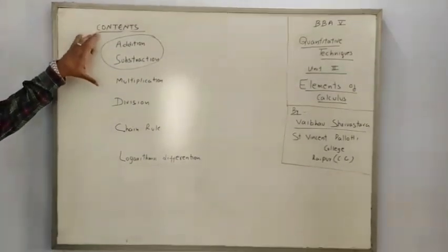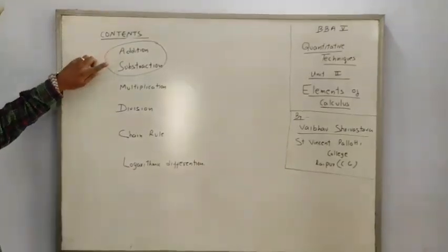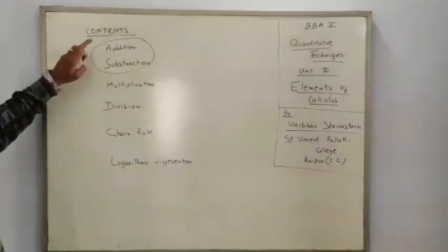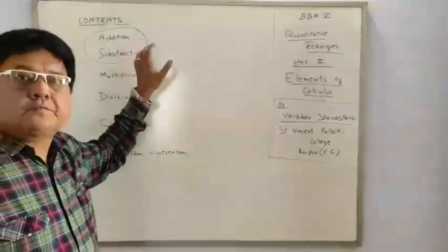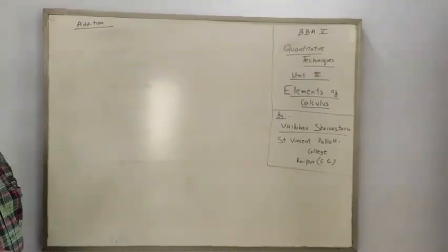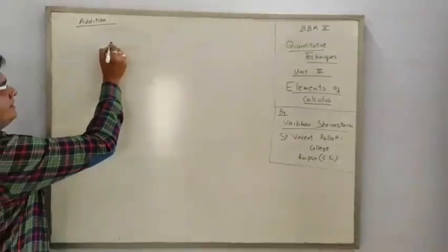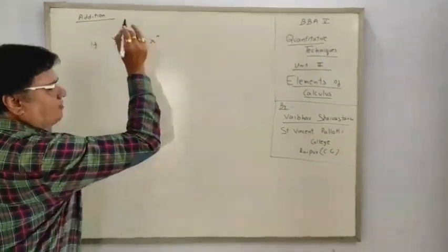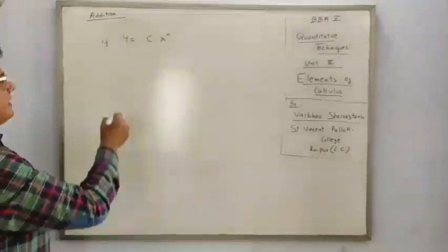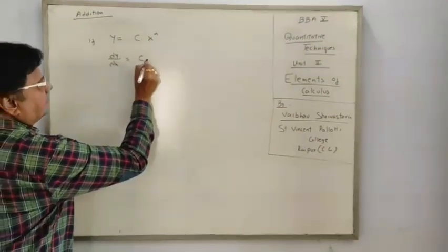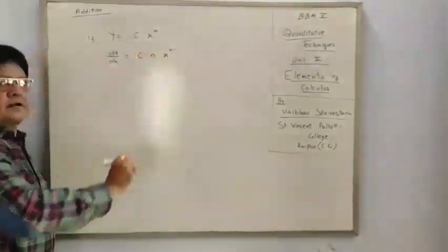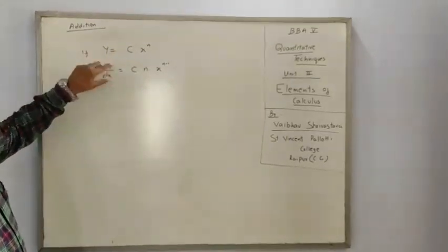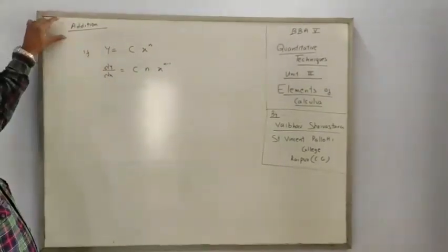The contents of Unit 2 on differentiation are: addition, subtraction, multiplication, division, chain rule, and logarithmic differentiation. We will be covering addition and subtraction in this video. Before going to addition, I would like to explain one more important rule: if Y = C·X^N — multiplied by a constant — then the differentiation will be C·N·X^(N-1). If it is multiplied by a constant, the derivative will also be multiplied by that constant.